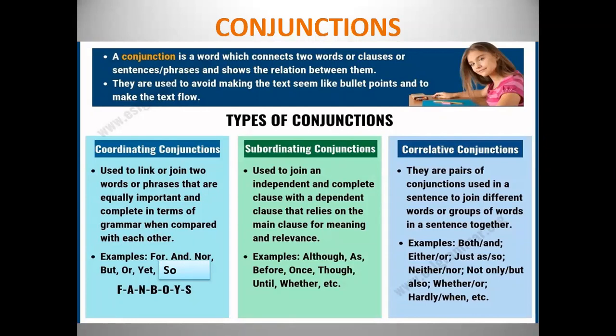In easy language, we can say that conjunctions are connecting words — they connect two words, clauses, sentences, or phrases. Now, talking about types of conjunctions, there are three types: first is coordinating conjunctions, second is subordinating conjunctions, and third is correlative conjunctions. We will discuss each one.